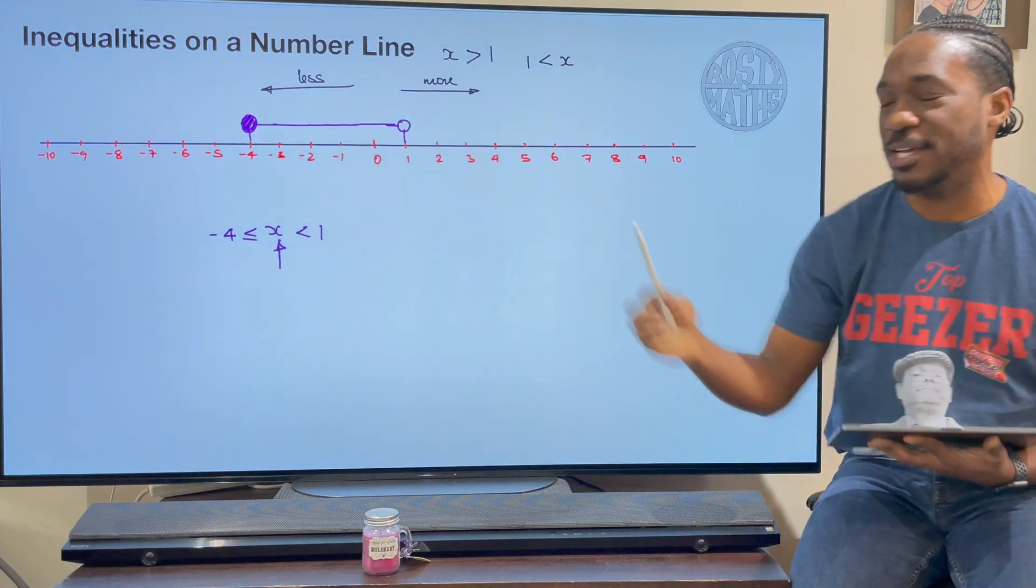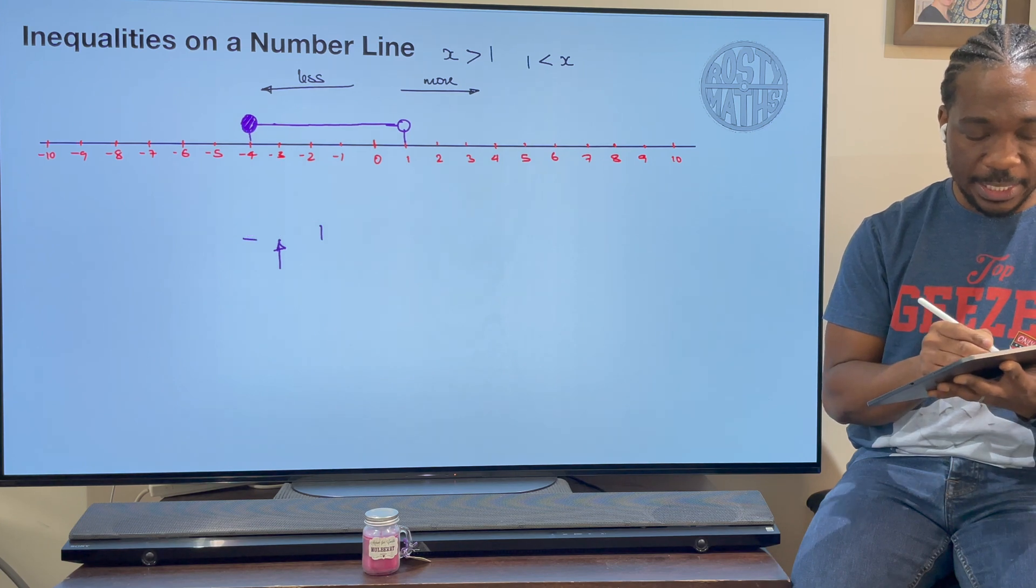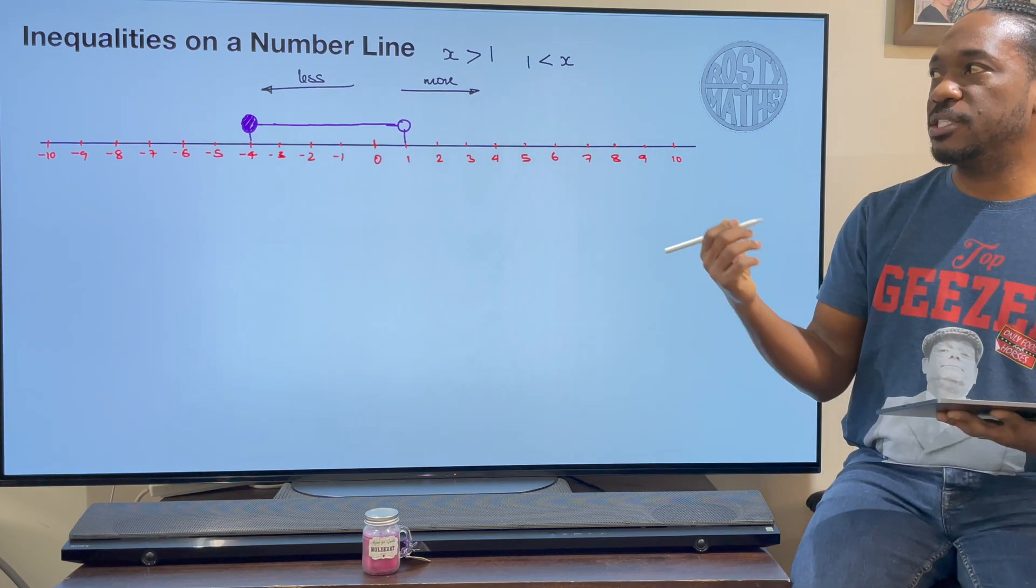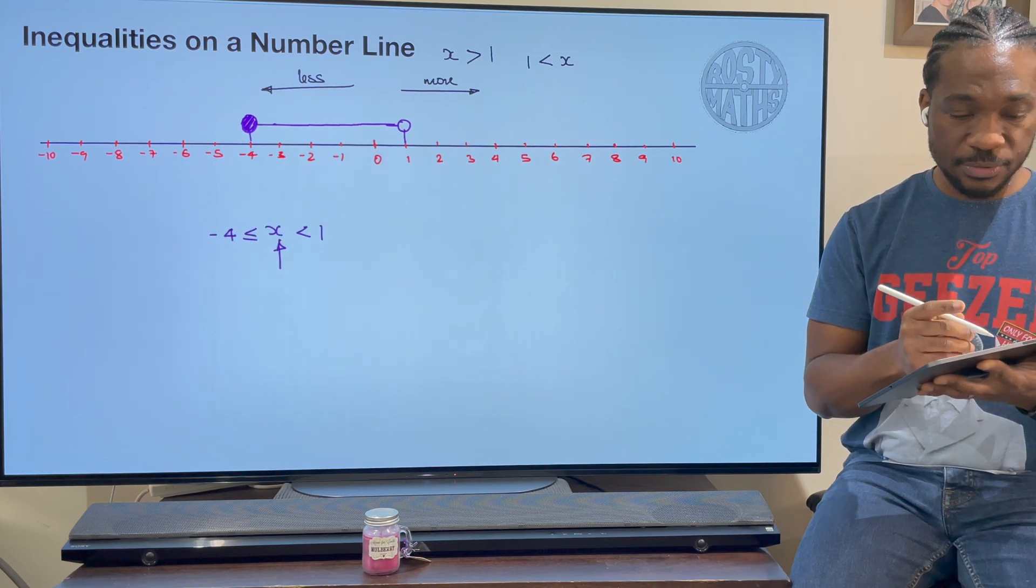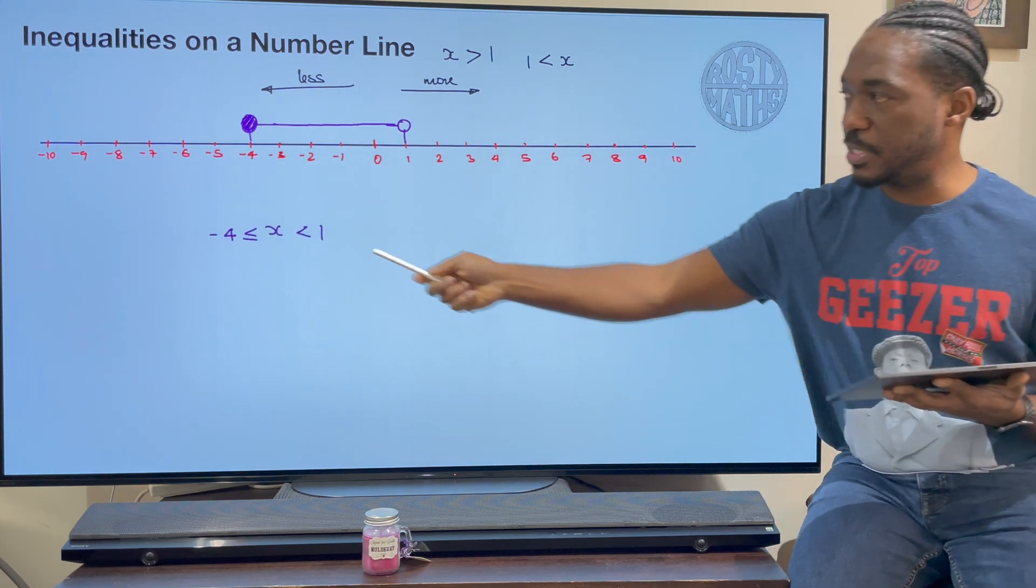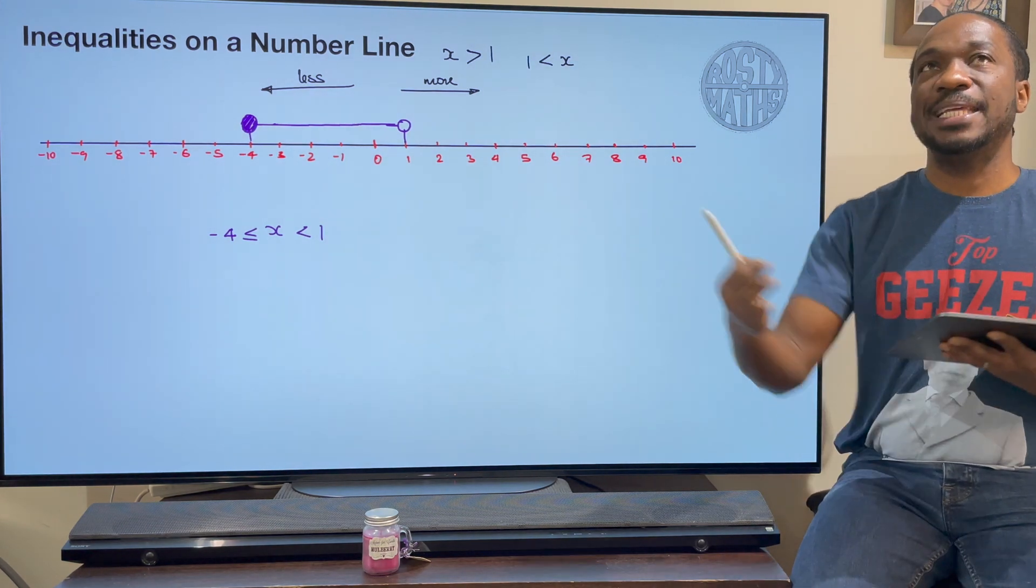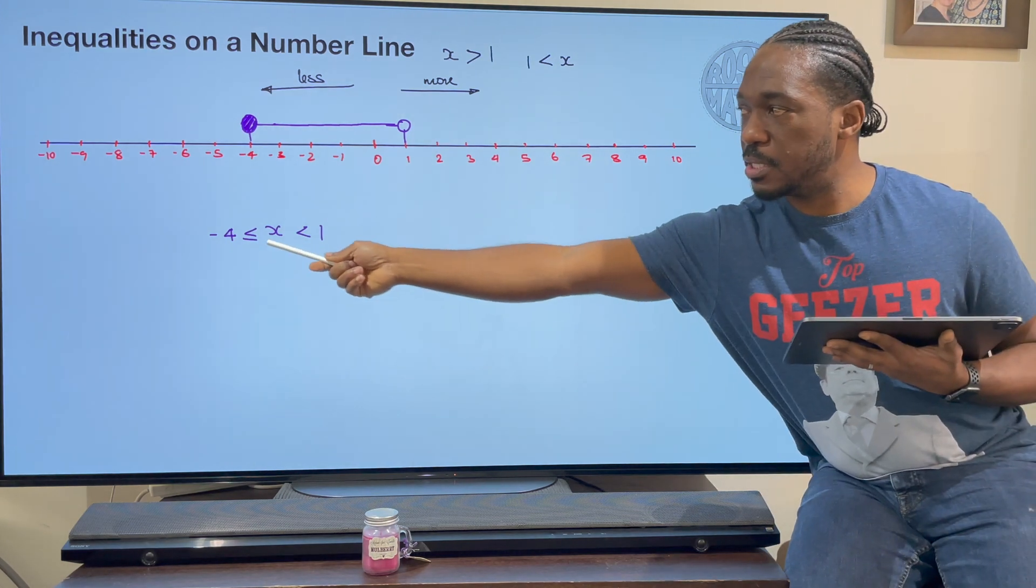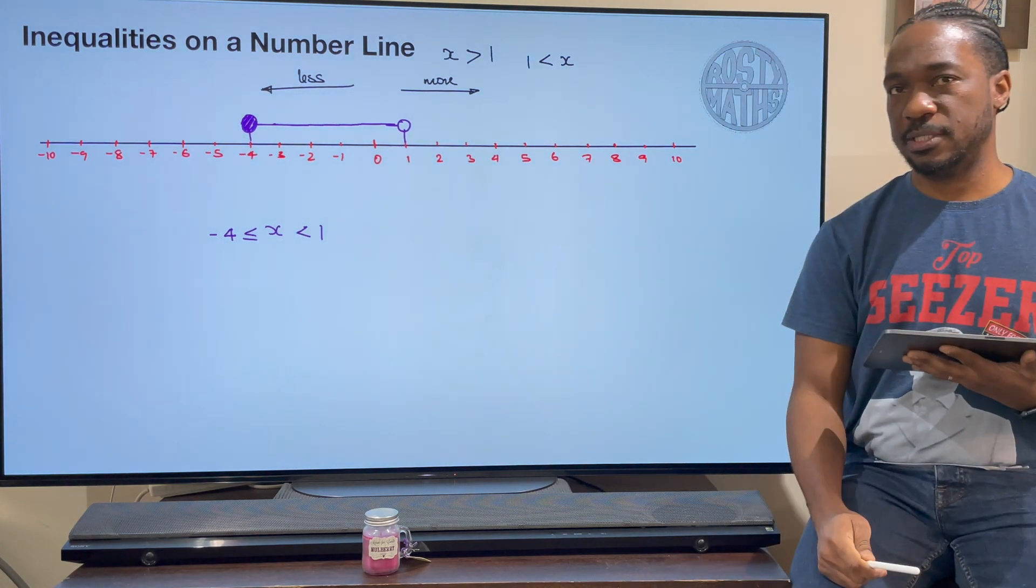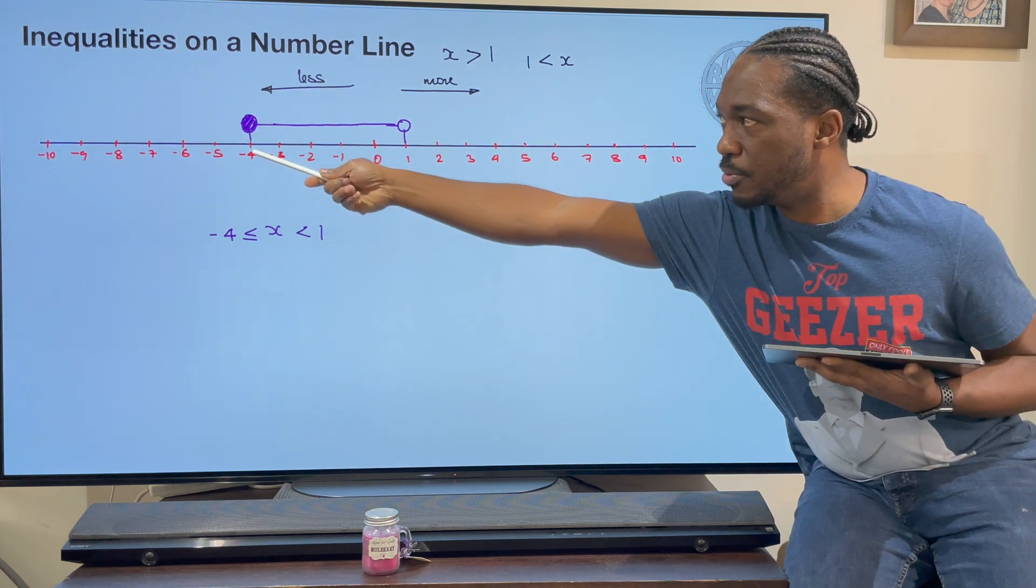Now last of all, if they say can you state the integers that represent this inequality, or list the integers, what they want you to do is write down all the numbers that fit this inequality. Well, you can see it on my number line because it includes negative 4, because it's greater than or equal to: negative 3, negative 2, negative 1, 0.